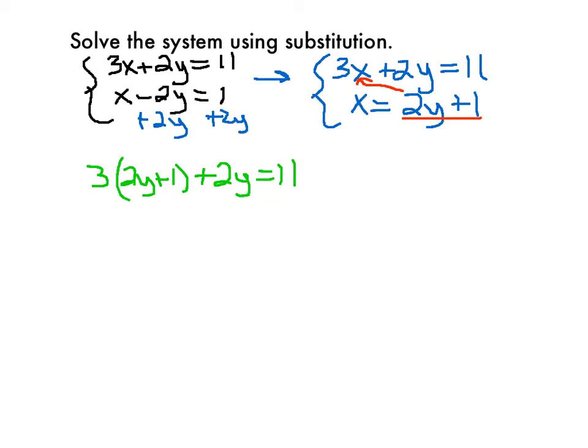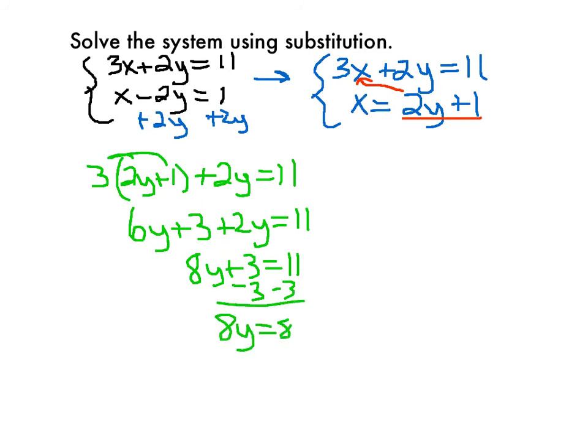Now when I solve this, I'm going to distribute. I'll get 6y plus 3 plus 2y equals 11. I'm going to combine the y's to get 8y plus 3 equals 11. Subtract 3, and then I'll divide by 8. If I divide by 8, I'm going to get y equals 1. Good.